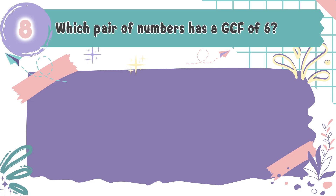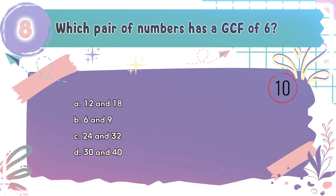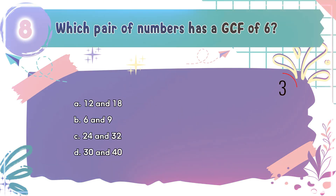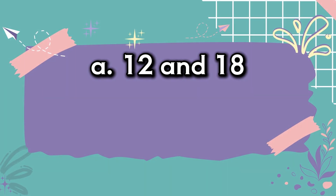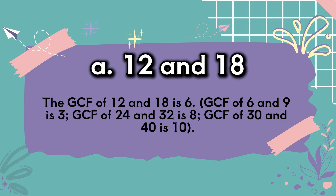Question number 8: Which pair of numbers has a GCF of 6? The choices are A: 12 and 18, B: 6 and 9, C: 24 and 32, D: 30 and 40. The correct answer is A, 12 and 18. The GCF of 12 and 18 is 6. The GCF of 6 and 9 is 3. The GCF of 24 and 32 is 8. The GCF of 30 and 40 is 10.